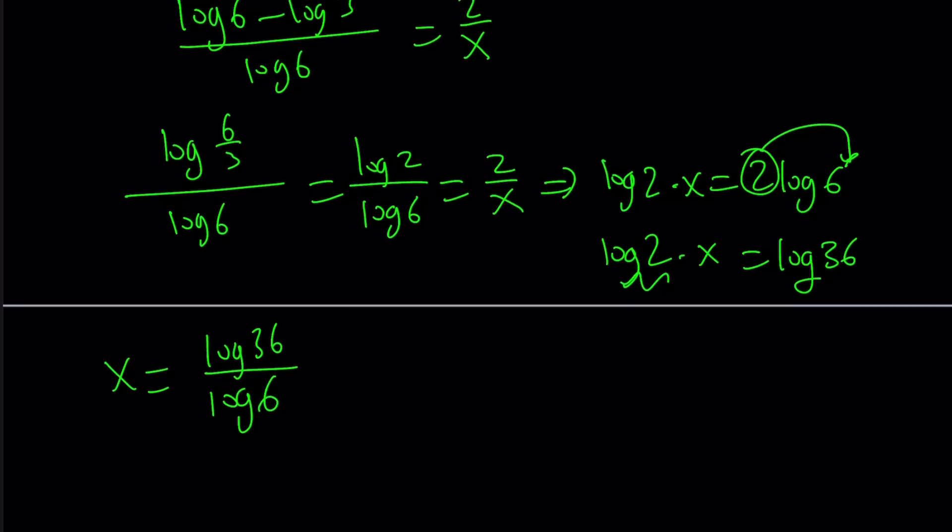Obviously there's a couple different ways to write it. By using change of base formula backwards this is equivalent to log 36 with base 2. This is log 2. Therefore this is going to be a 2 as well. So log 36 base 2. That's the x value.